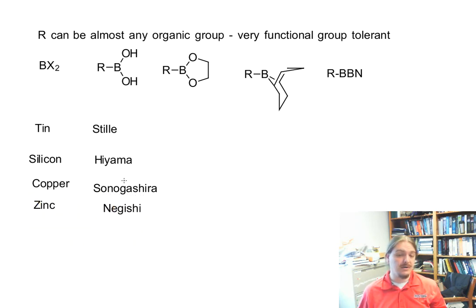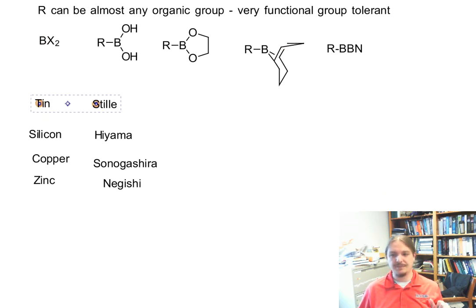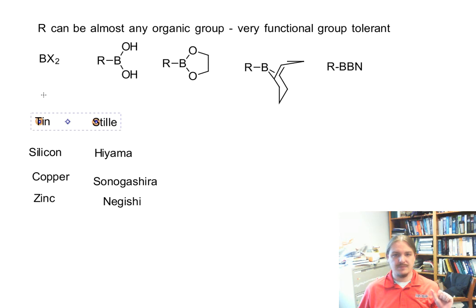And there are other variations with Grignard reagents and so on. And most of these reactions, especially the boron version and the tin version are fairly versatile and tolerate a wide range of functional groups. So this concludes my video on nucleophilic aromatic or on the Suzuki reaction and the end of my series on nucleophilic aromatic substitution reactions. Thank you for watching.